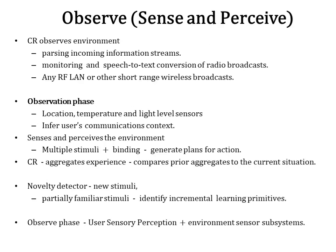First comes the observing phase, which includes sensing and perceiving. Cognitive radio observes its environment by parsing incoming information streams. These can include monitoring and speech-to-text conversion of radio broadcasts. Any radio frequency LAN or other short-range wireless broadcasts that provide services awareness information may also be parsed. In the observation phase, a cognitive radio also reads location, temperature, and light level sensors among other parameters to infer the user's communications context.